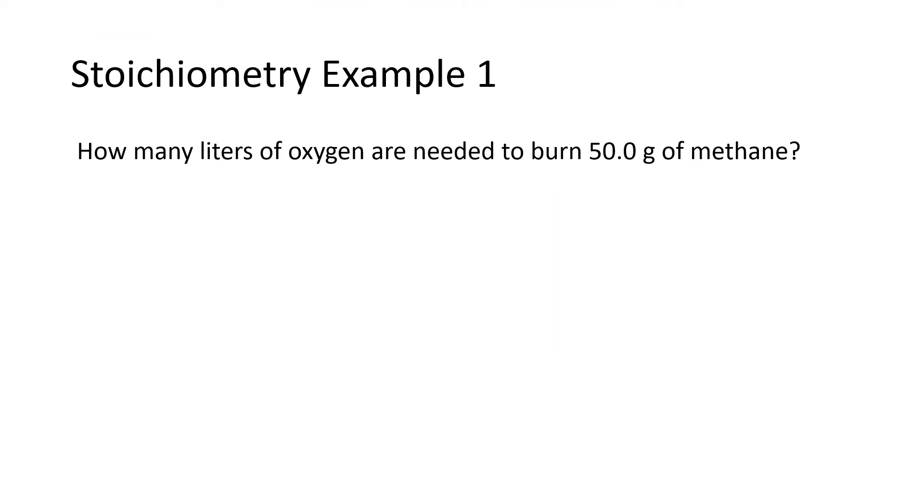Let's work an example. This says how many liters of oxygen are needed to burn 50 grams of methane? Well, if we're doing stoichiometry, which we are because we're doing two different chemicals, right? We're given an amount of methane and we're asked to find an amount of oxygen. So two chemicals means it's a stoichiometry problem. We're going to need to build conversion factors with two numbers in them. So we have to have a balanced chemical equation. So if we're going to burn methane, burning means reacting with oxygen from the air. And when a hydrocarbon, a compound containing carbon and hydrogen burns, the two products are carbon dioxide and water. So we've got to have an equation and we have to balance it.